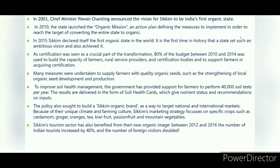It is the first time in history that a state set such an ambitious vision and also achieved it. As certification was seen as a crucial part of the transformation, 80% of the budget between 2010 and 2014 was used to build the capacity of farmers, rural service providers, and certification bodies, and to support farmers in acquiring certification. Many measures were also undertaken to supply farmers with good quality organic seeds, such as strengthening local organic seed development and production. To improve soil health management, the government provided support for farmers to perform 40,000 soil tests per year.